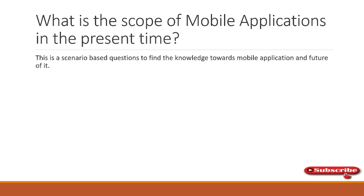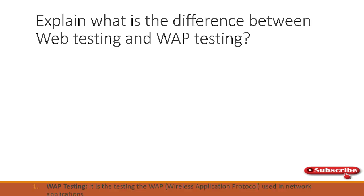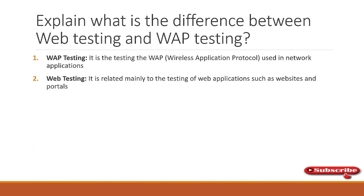Explain the difference between web and WAP testing. This is an entry-level question. WAP stands for Wireless Application Protocol, used in network applications. Web testing refers to testing web applications such as websites and portals accessed in the mobile device's browser.